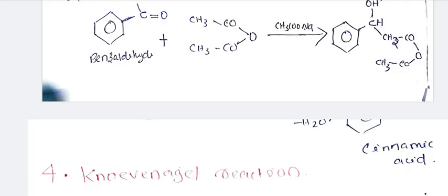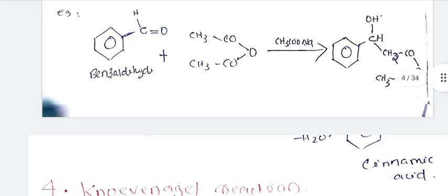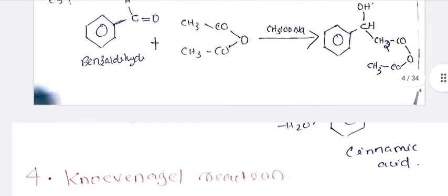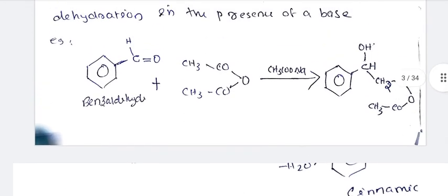For example of Perkin Condensation: we use cinnamic acid preparation. We take an aromatic aldehyde (ArCHO), treated with acetic anhydride (CH₃COO-CO-CH₃) in the presence of a base. The aromatic aldehyde reacts with the carboxylic acid anhydride to form the intermediate, followed by dehydration to give the alpha, beta unsaturated acid product.